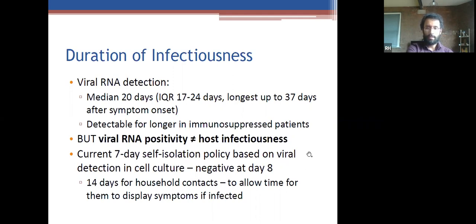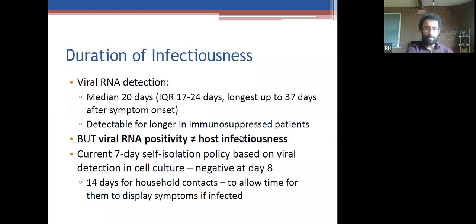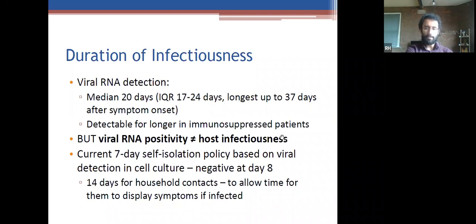Duration of infectiousness: viral RNA can be detected for quite a long time after symptom onset, with a median of around 20 days, but up to five to six weeks — longer if immunosuppressed. However, detecting viral RNA doesn't necessarily mean you're still infectious; you may just have remnants of viral RNA after the host has cleared the virus. The current seven-day self-isolation policy is based on viral detection in cell culture, shown to be negative at day eight. The 14-day self-isolation for household contacts allows time for contacts to display symptoms if infected.